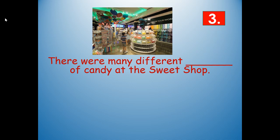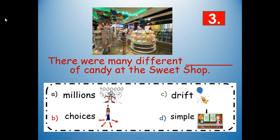Number three: there were many different blank of candy at the sweet shop. Would it be millions, choices, drift, or simple? There were many different choices of candy at the sweet shop. Choices — C-H-O-I-C-E-S.